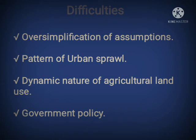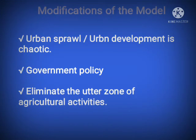These difficulties can be modified by taking certain steps. The modifications include: addressing the chaotic nature of urban sprawl and urban development, ensuring governmental policy is beneficial for farmers, and eliminating the outer zone of agricultural activities.